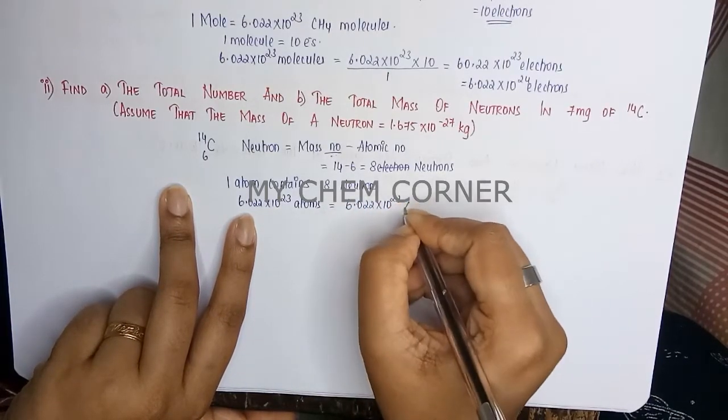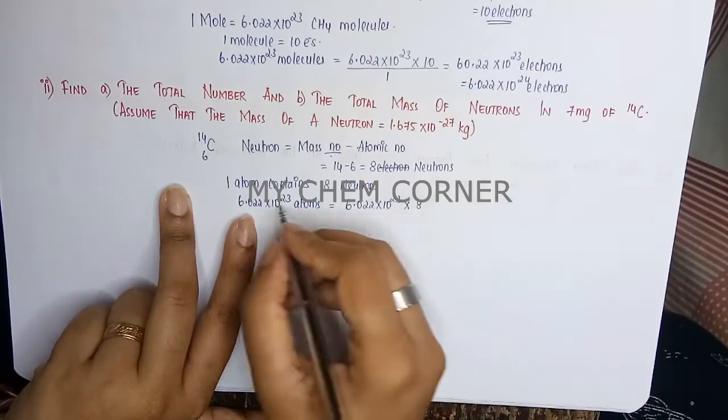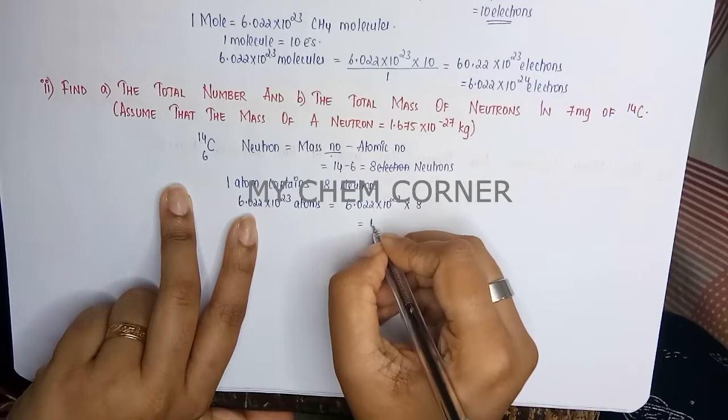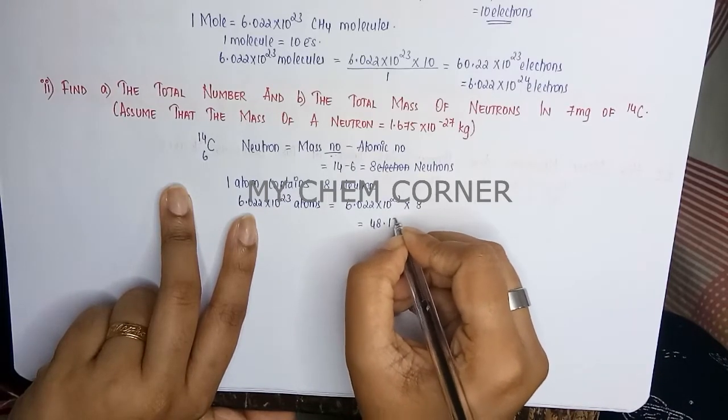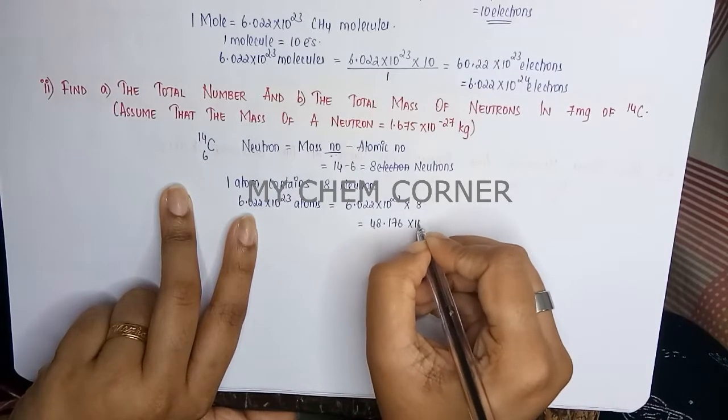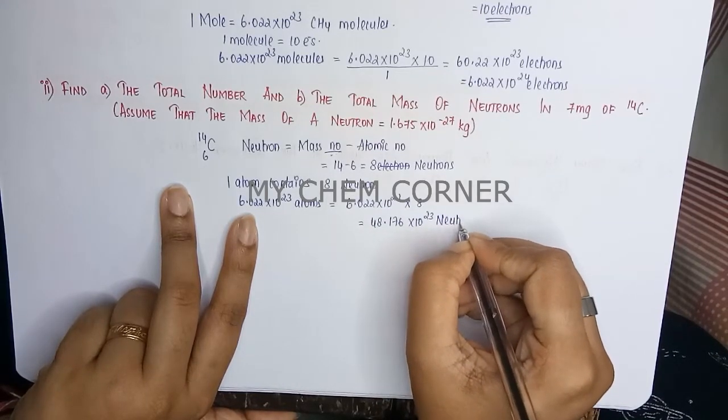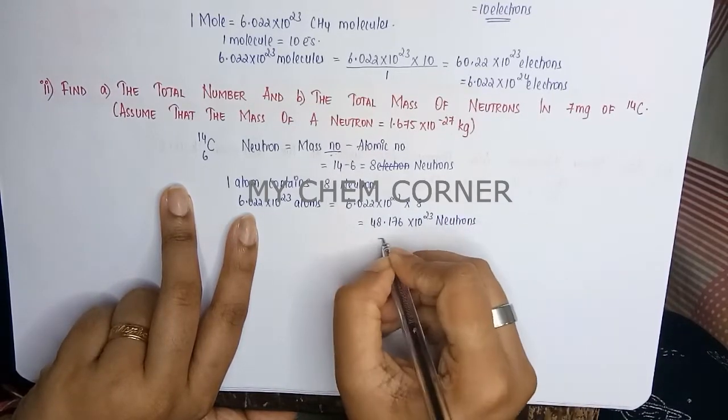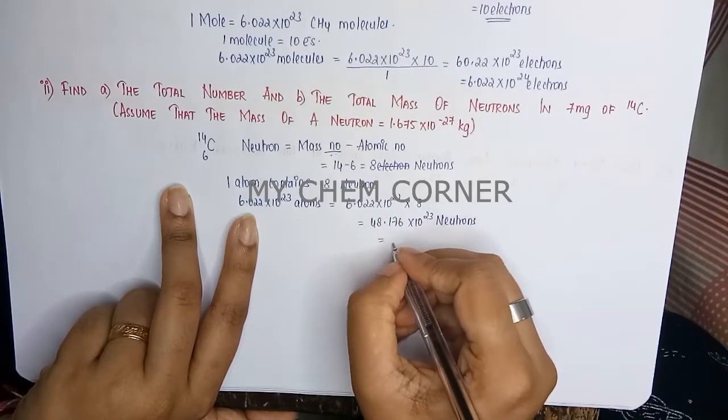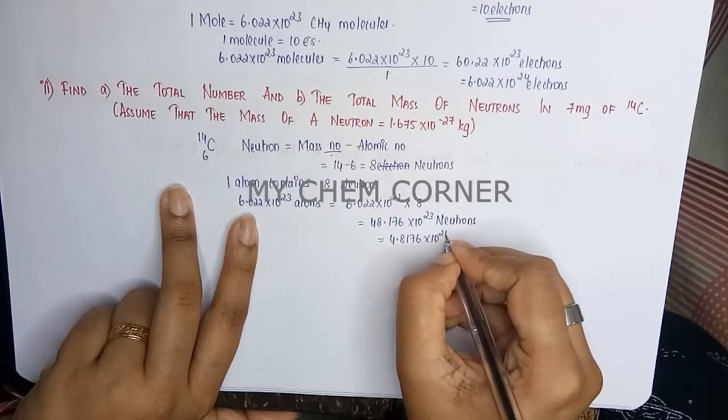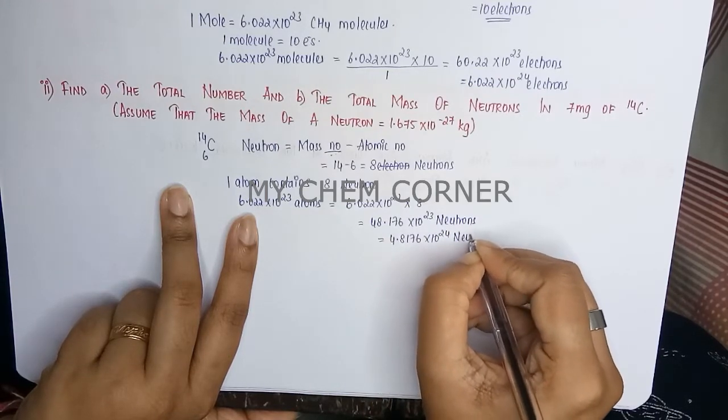This will be 6.022 times 10 to the power 23 times 8, so just cross multiply divided by 1. Now this will give 48.176 times 10 to the power 23 neutrons. When we shift the decimal, this will become 4.8176 times 10 to the power 24 neutrons.